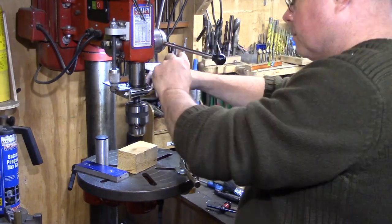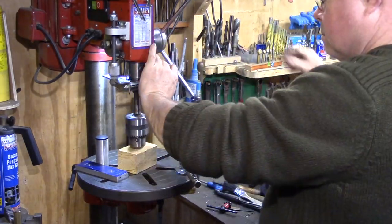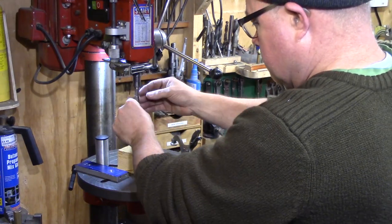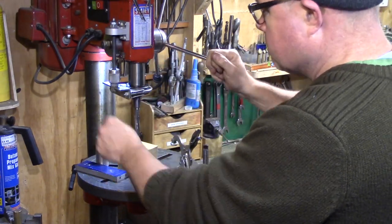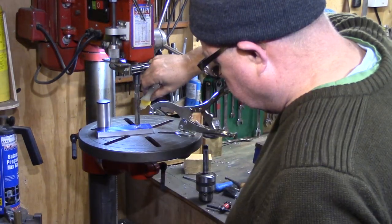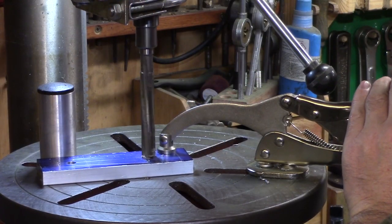My 12mm reamer is a taper shank fit, so the chuck was removed and the reamer fitted to the drill spindle. Again, using cutting oil, the reamer was gently plunged through the hole.